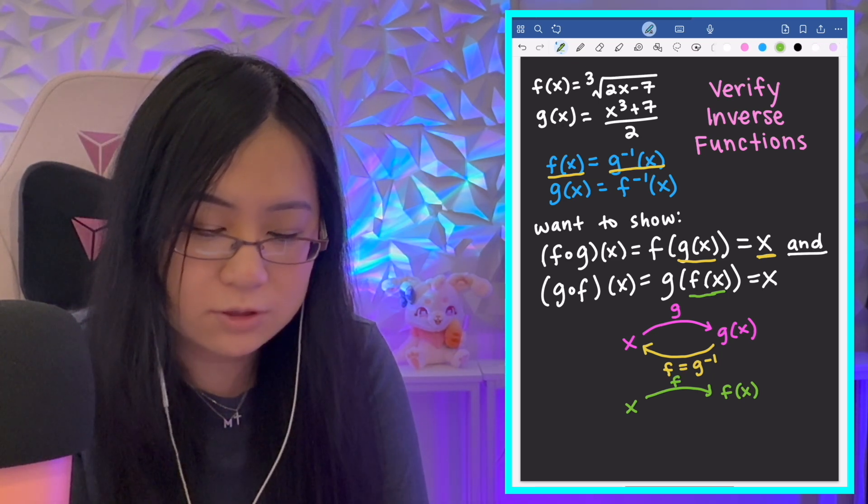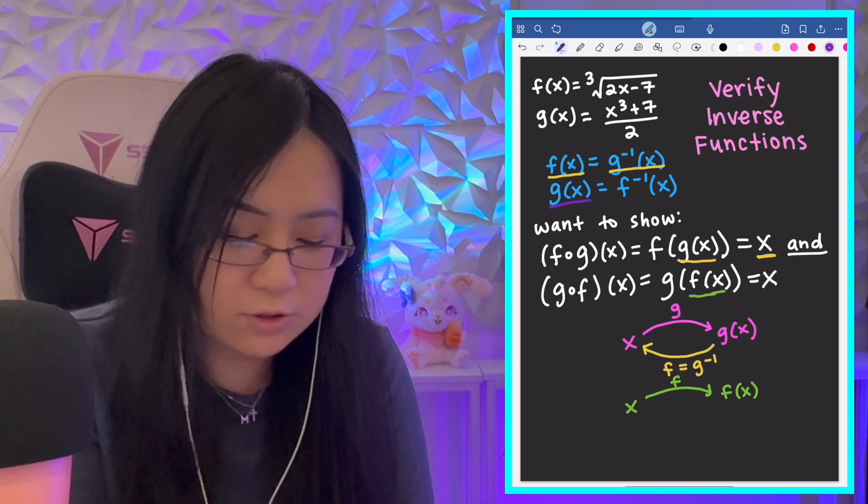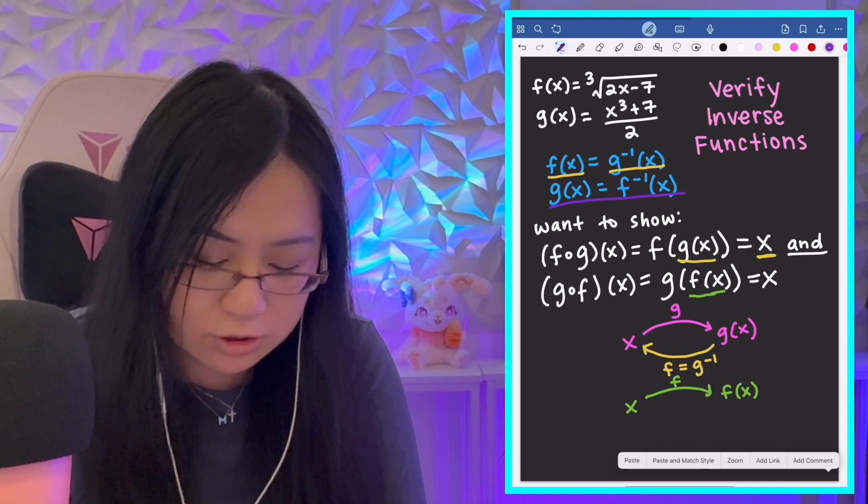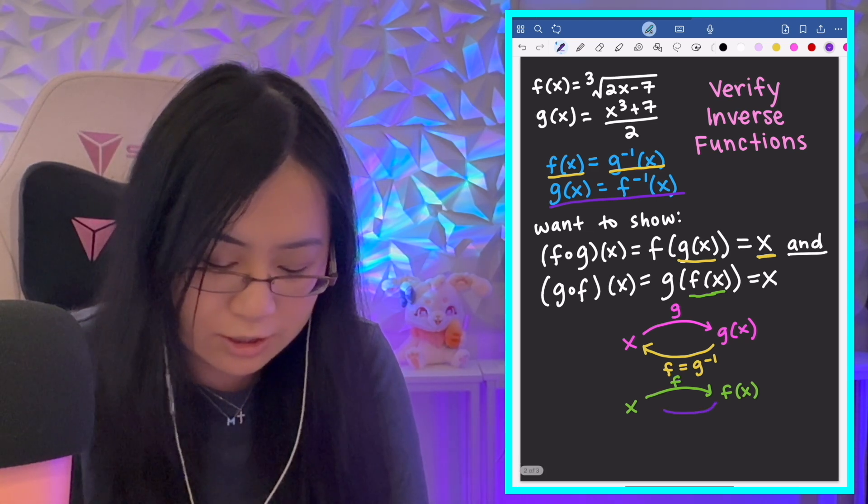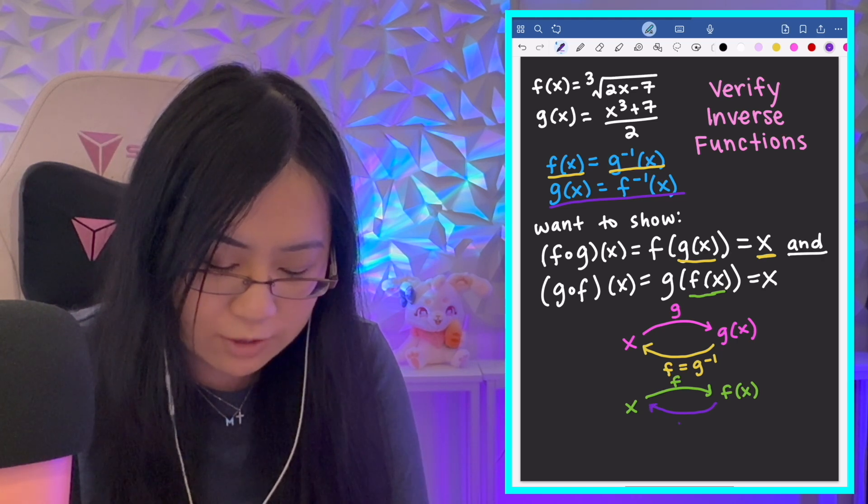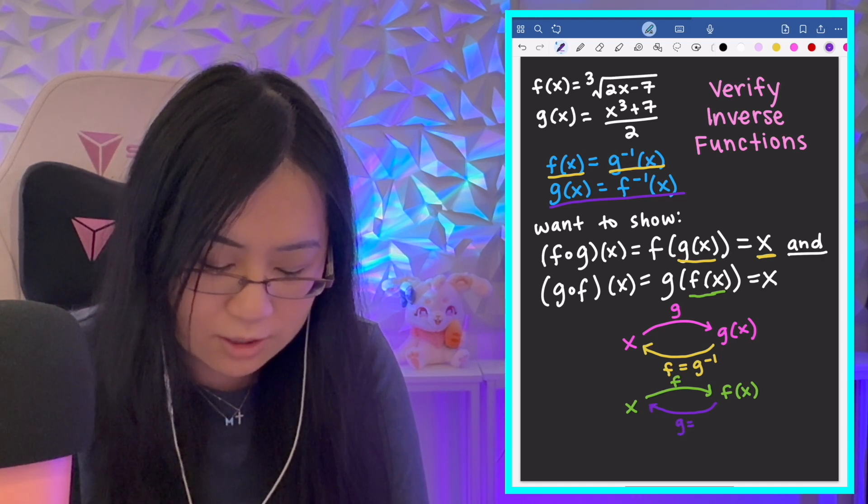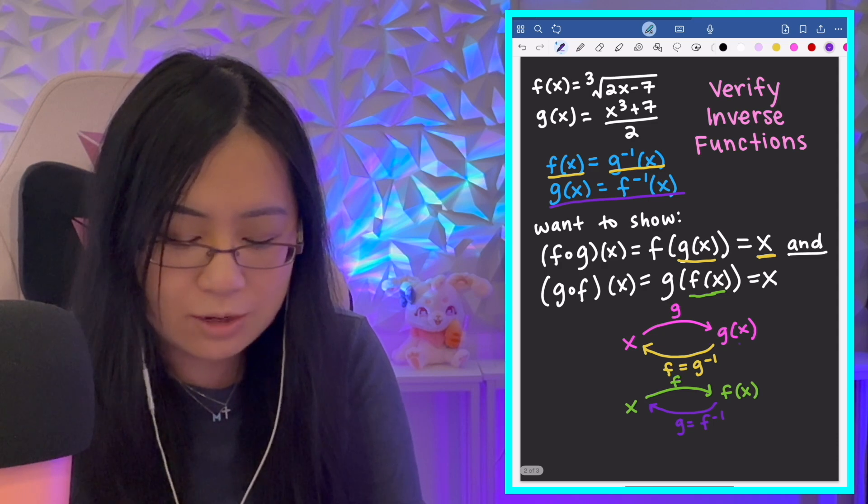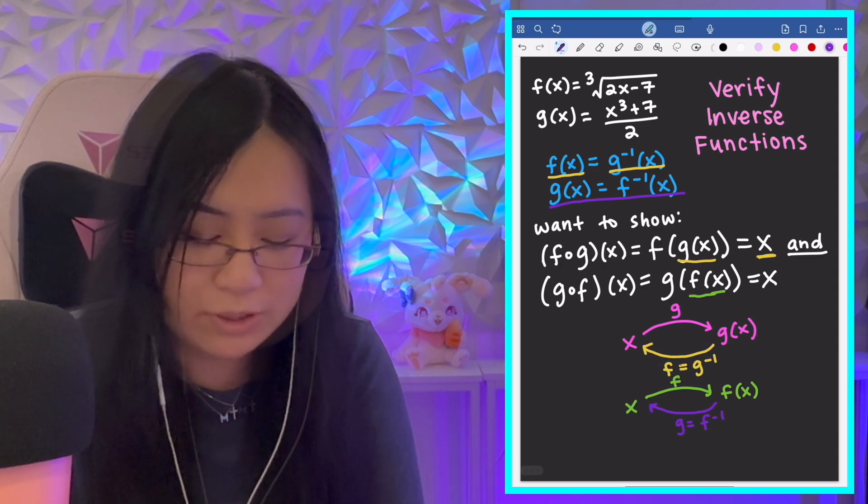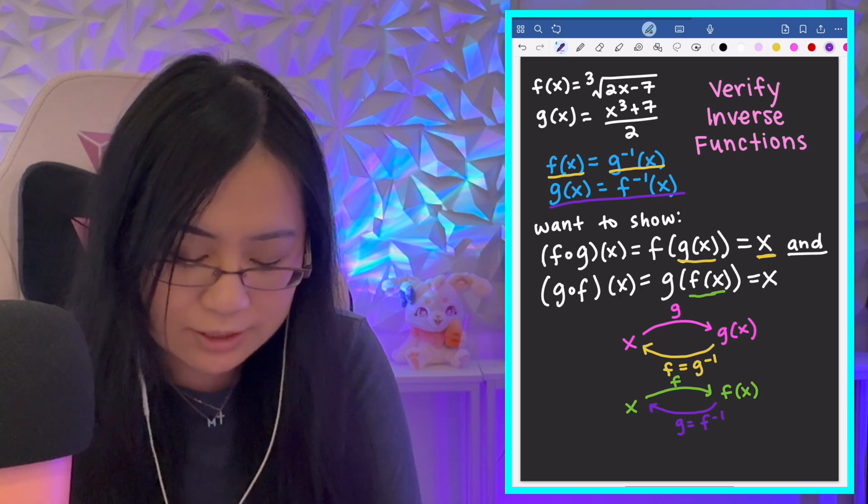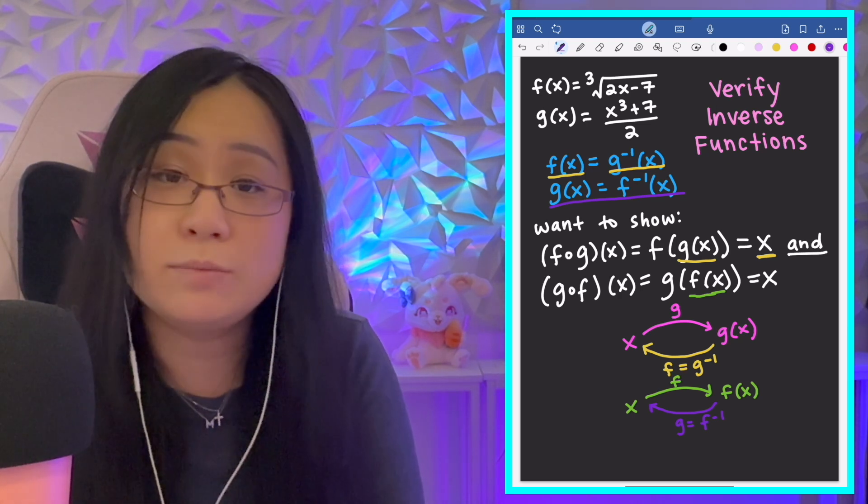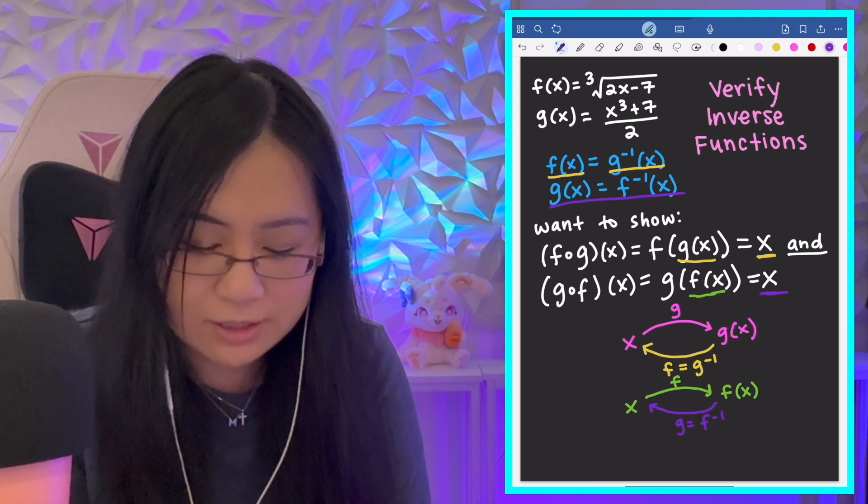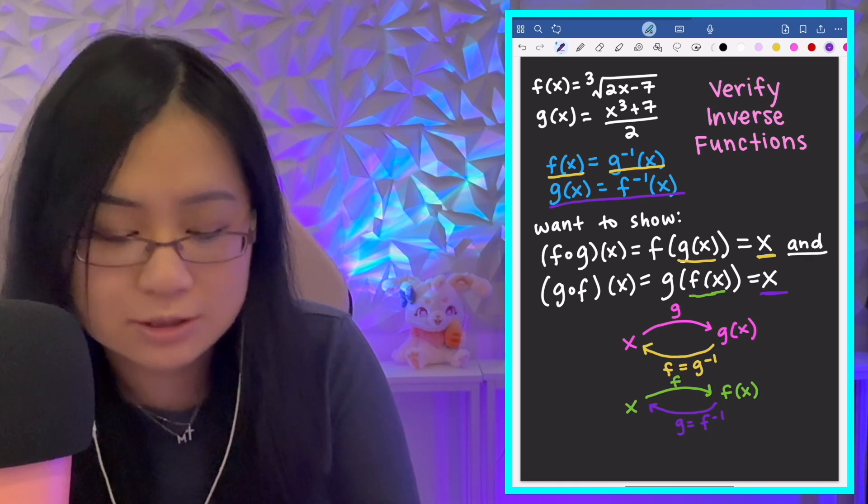And then if I put in that entire f(x) into the input of g, which is the inverse of f, then g should undo what I just did there to that x. I hope that makes sense. It basically takes that output and puts it as an input into the inverse function and brings it back to x, which is why we are expecting x for these compositions.